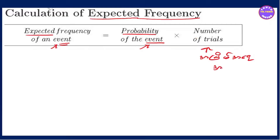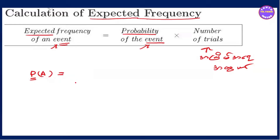We call it exercise 7.1 and 7.2. We call it probability of A. This is probability of A. Then we have to experiment with the same experiments repeated. The experiment has to be a very large number of trials.